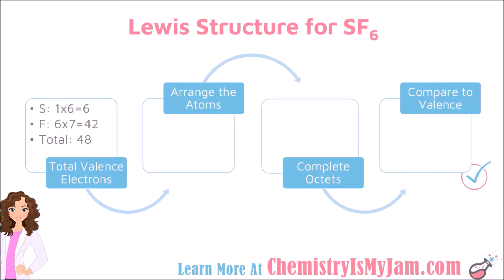An example would be sulfur hexafluoride, SF6. So let's draw the Lewis structure. This structure has 1 sulfur. Sulfur has 6 valence electrons. 1 times 6 is 6. There are 6 fluorines. Fluorine has 7 valence electrons. 6 times 7 is 42. For a total of 48 valence electrons.